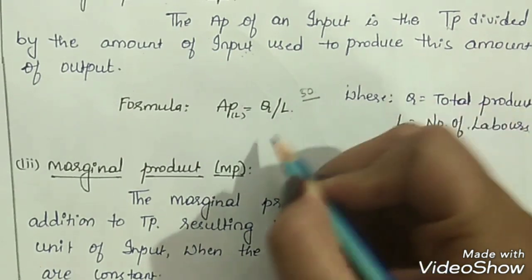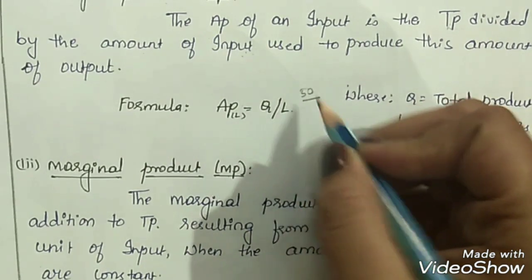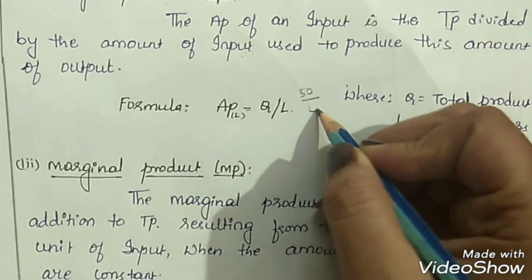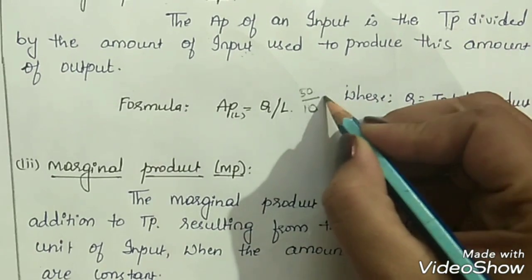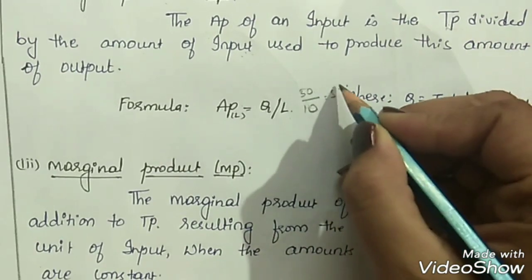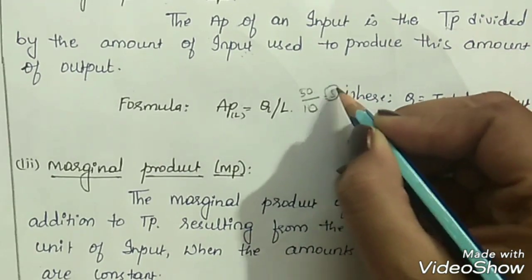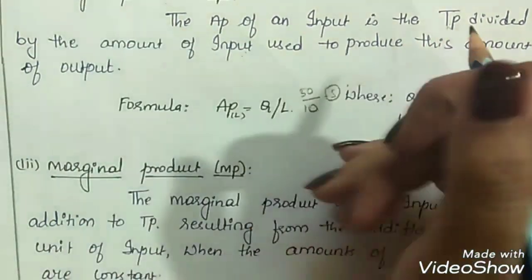As per our example, total product is 50 divided by number of labors which is 10, giving us an output of 5. So 5 becomes our average product.